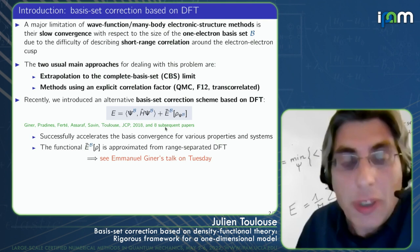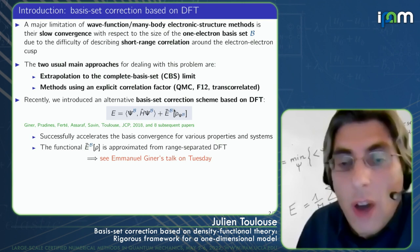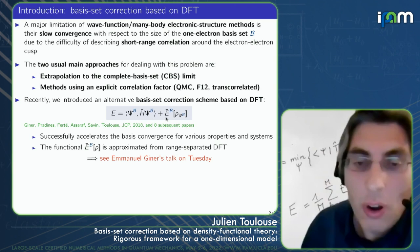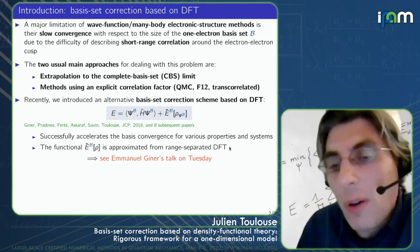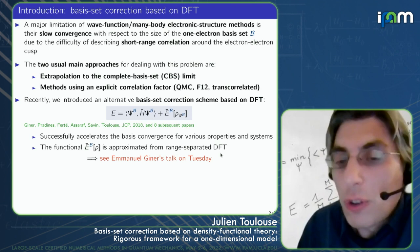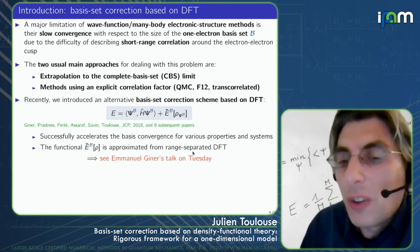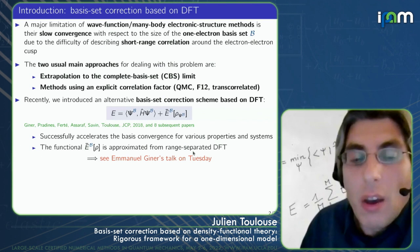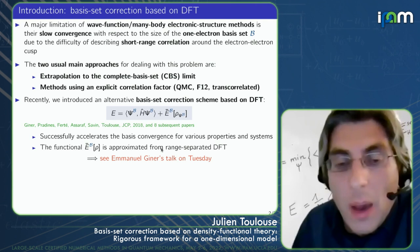We showed that this approach successfully accelerates the basis convergence of various properties and systems. To approximate this basis set correction functional in practice, we use range-separated DFT, where people have developed short-range correlation functionals. Since the basis set effect is essentially short-range correlation, we can reuse those functionals via an approximate mapping to approximate the basis set correction functional. For full details, see Emanuel Schinner's talk tomorrow.